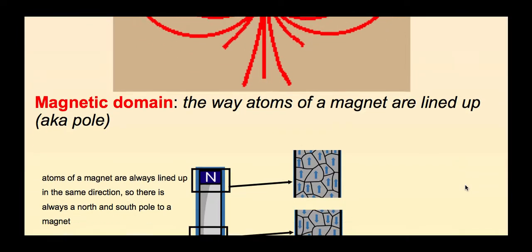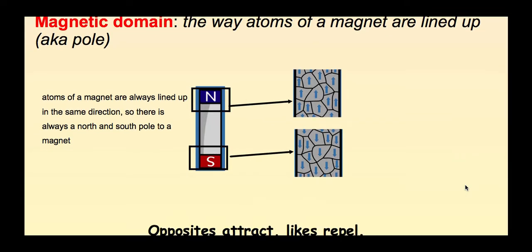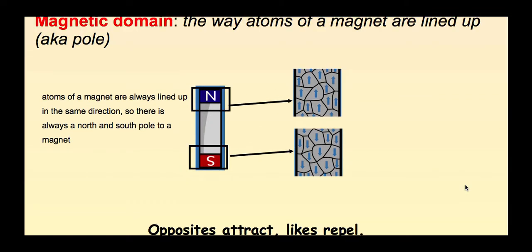The magnetic domain is the way the atoms of a magnet are lined up. It's also known as the pole. So in this picture, you can see the two different poles, the two domains. So atoms of a magnet are always lined up in the same direction. That's why there's a north and a south pole to every magnet. So the top part of the magnet would be north, the bottom part would be south. So all that means is all the atoms in the north pole are pointing up. All the atoms in the south pole are pointing down.